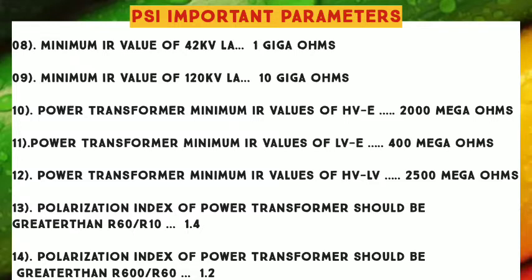Number 12: Power Transformer Minimum IR Values of HV-LV — 2500 Mega Ohms. Number 13: Polarization Index of Power Transformer should be greater than R-60 divided by R-10. Number 14: 1.2.